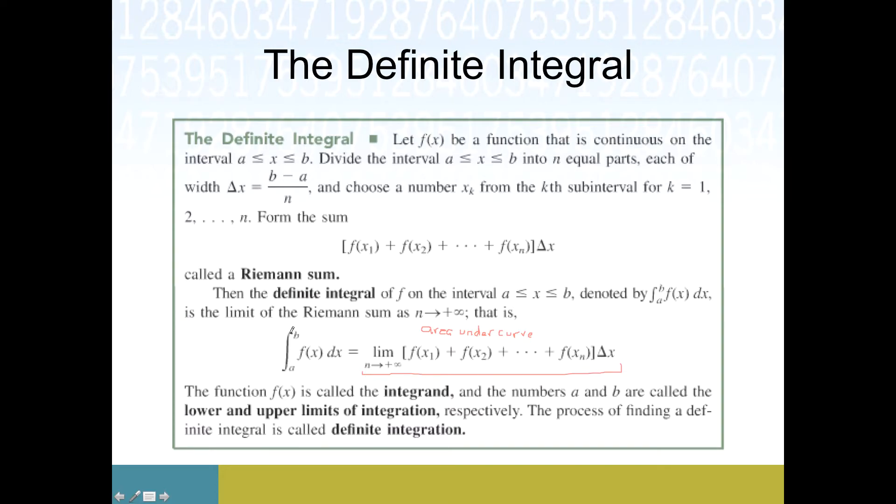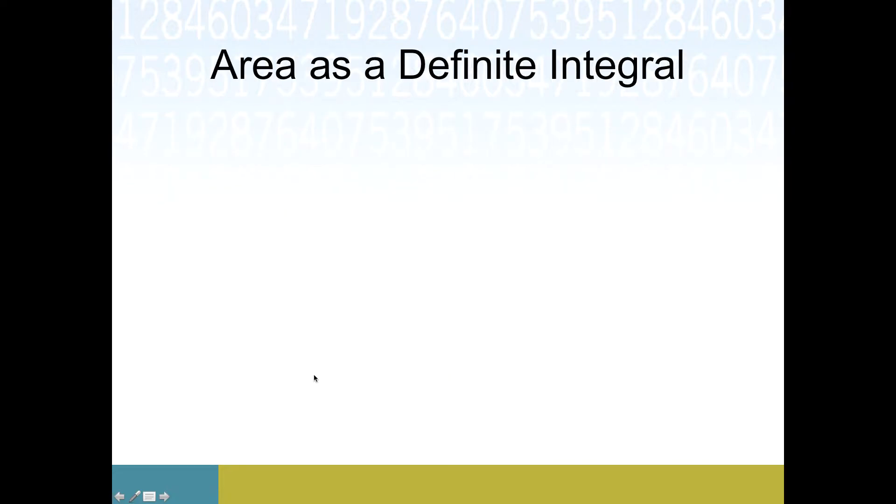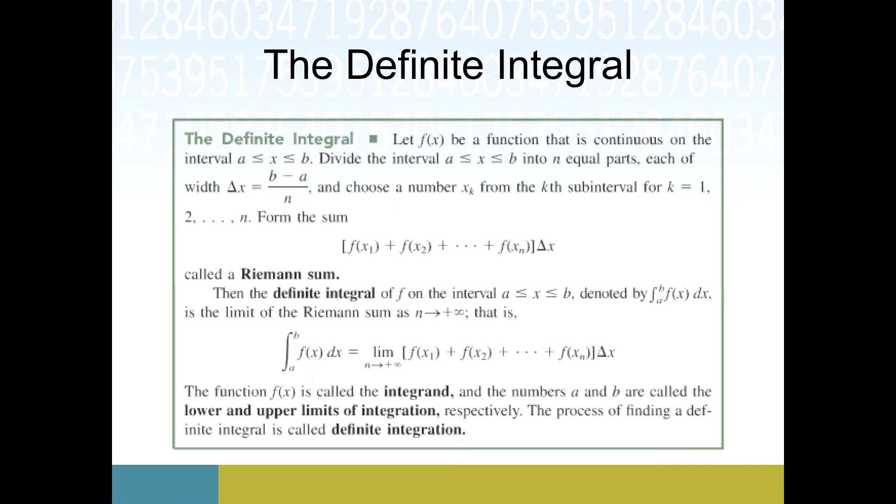This integral symbol should be familiar from anti-differentiation earlier in the chapter. The only difference is now we've got these a and b things, called respectively the lower and upper limits of integration, because it matters what interval of x values we're concerned with. We need to know the function and the x values we're operating with. Our lower limit is this a value and upper limit is b, f(x) is the function, and dx reminds us of what the input variable is.